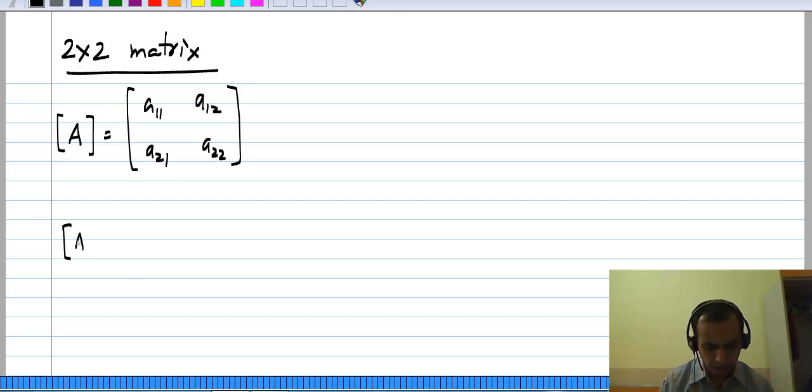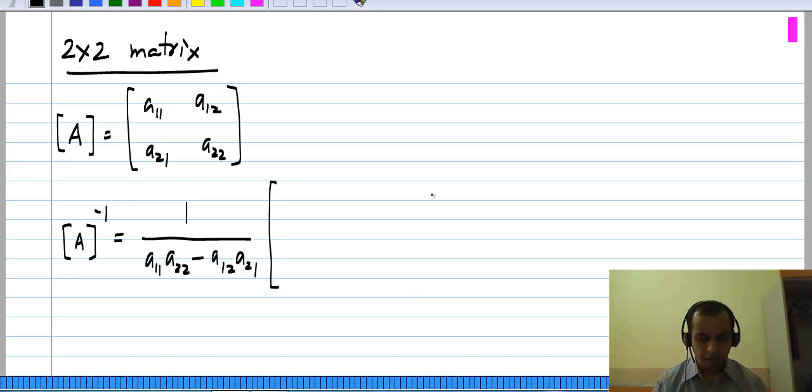And the inverse of A is 1 over determinant of A, which I think you already know how to calculate. It is the product of the diagonal terms A11 times A22 minus the product of the off diagonal terms A21, A12 times the matrix of cofactors, which is very easy for a 2 by 2 matrix.